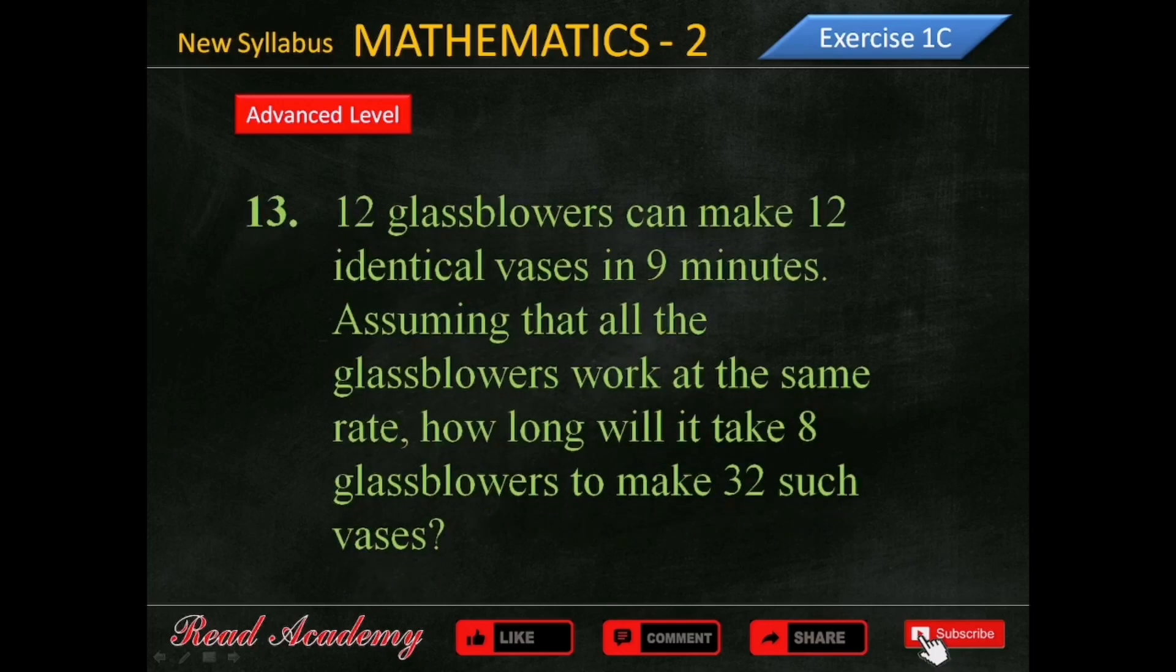12 glassblowers can make 12 identical vases in 9 minutes. Assuming that all the glassblowers work at the same rate, how long will it take 8 glassblowers to make 32 such vases?